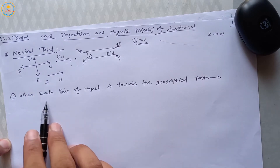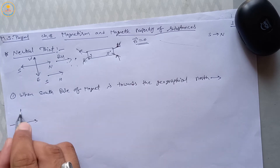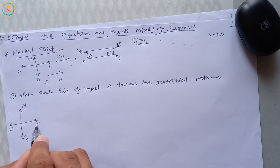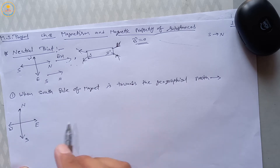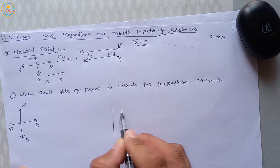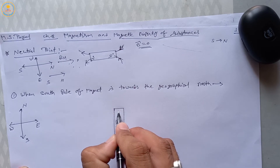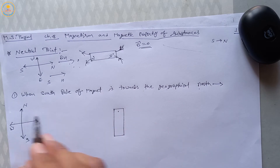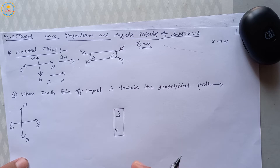First condition: when the south pole of a magnet is towards the geographical north. Suppose this is a compass with north, south, east, and west marked. If we keep a bar magnet such that the south pole is towards the geographical north, then the south pole points north and the north pole points south. We know that magnetic field lines start from the north pole to the south pole.